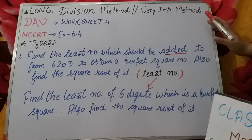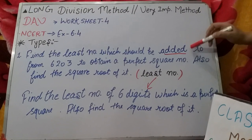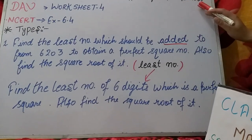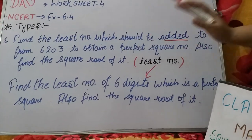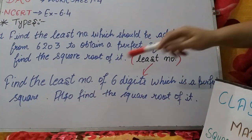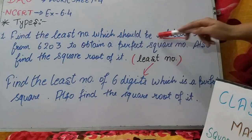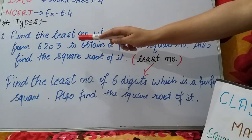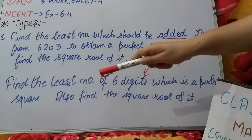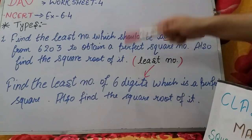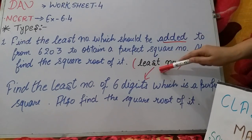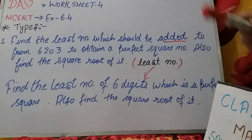Now we have to tell you how to solve the added method. First of all: find the least number which should be added to 6203 to obtain a perfect square number — the same question discussed earlier but now using the added method. What is written in the bracket? Least number. When using the added method, the least number is the lowest number.